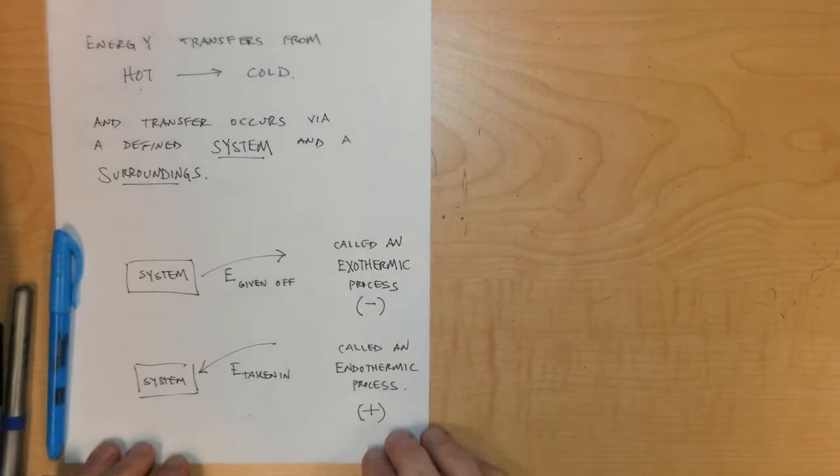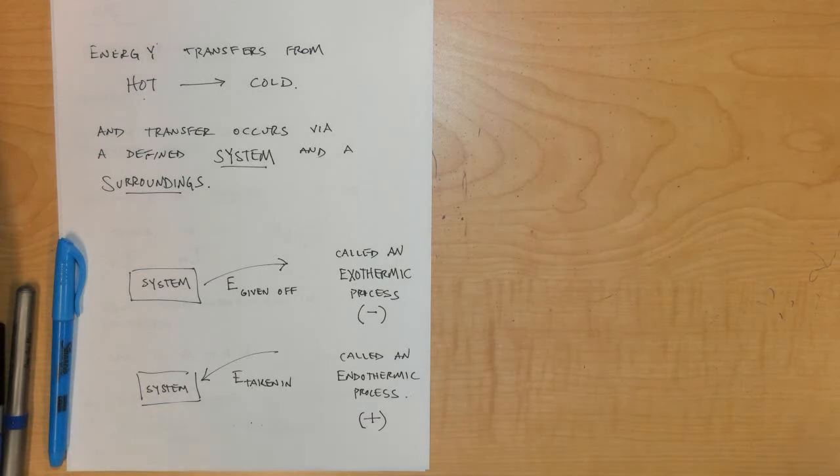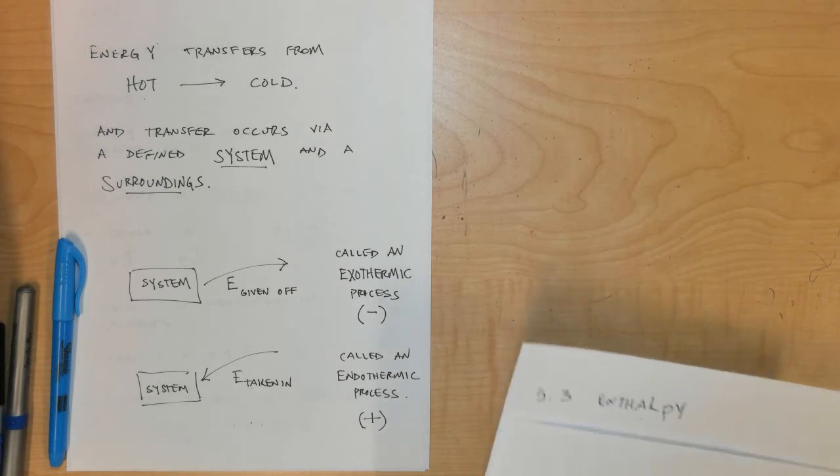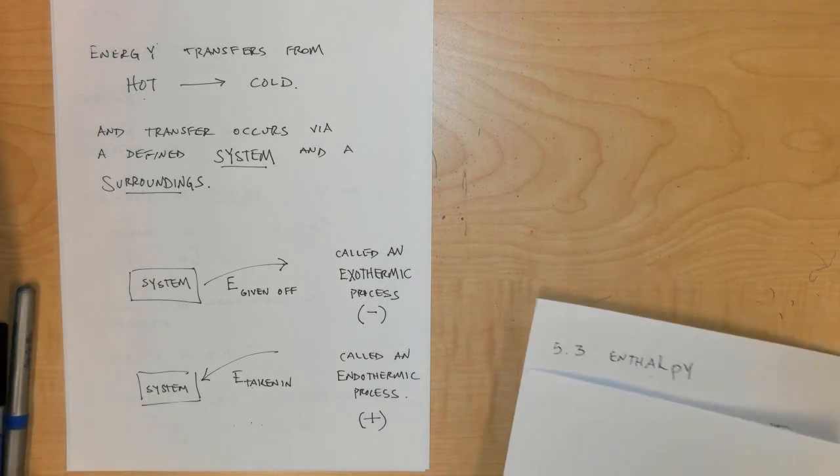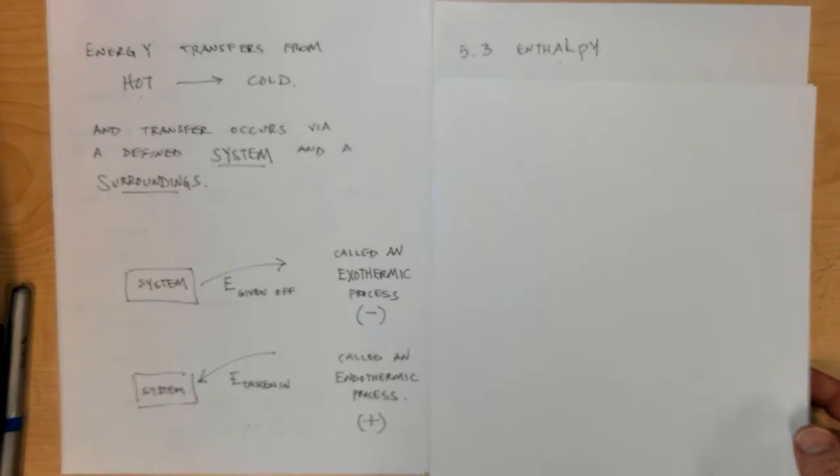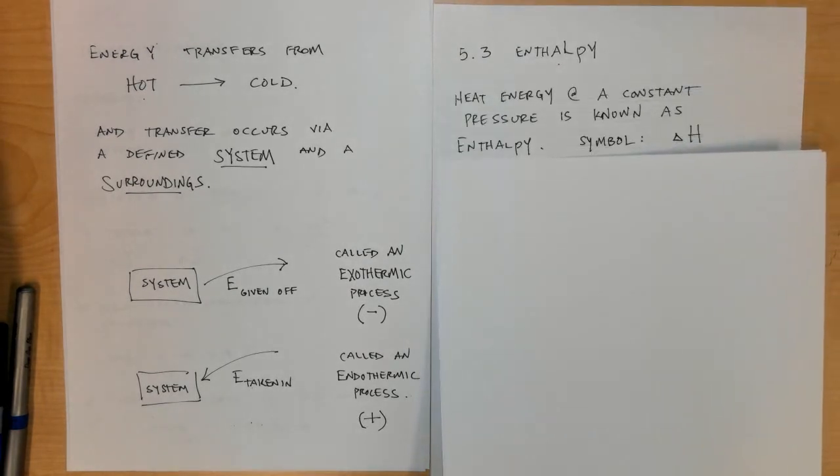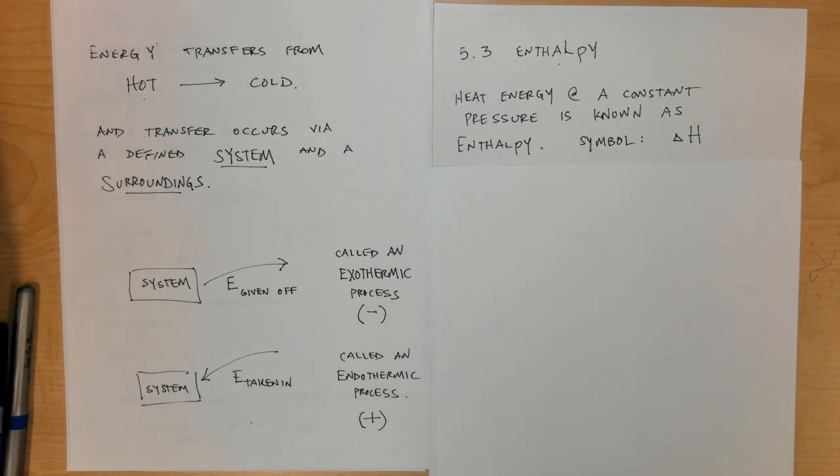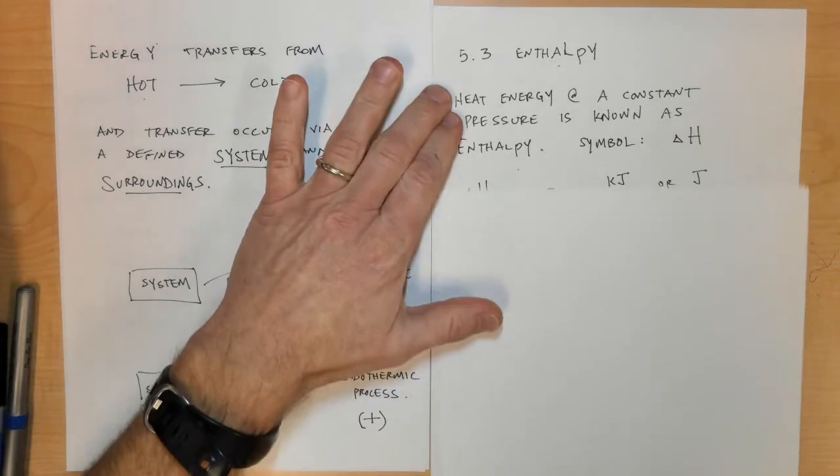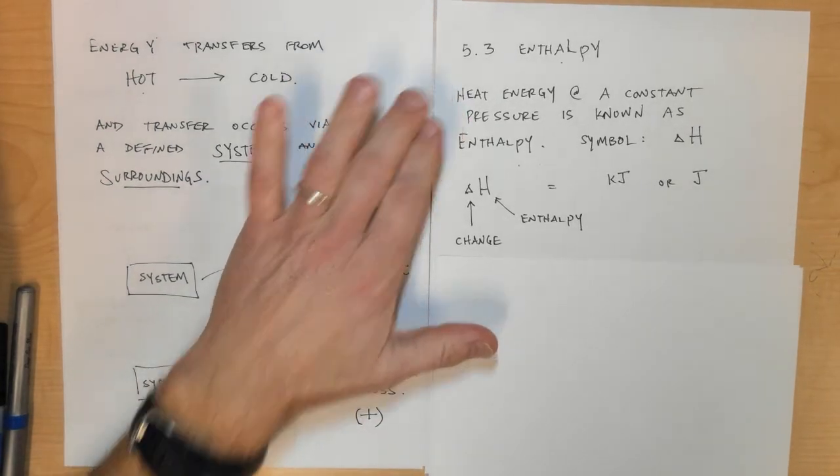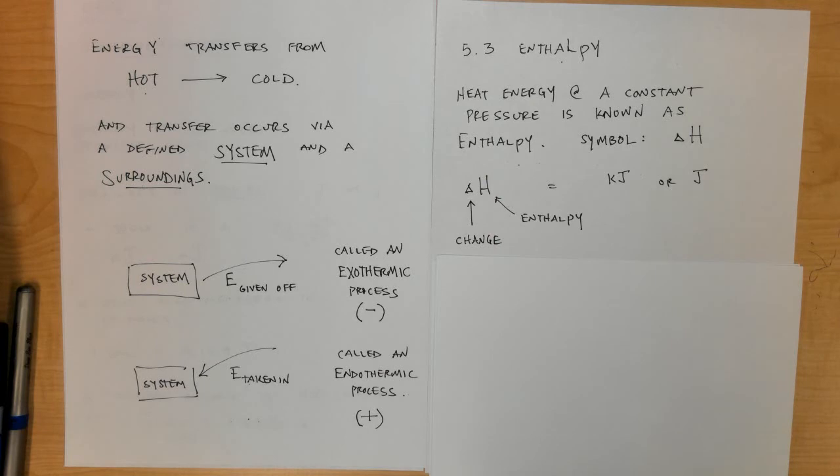When energy is measured at constant pressure and we're looking at heat energy in particular, it is known as enthalpy. Enthalpy is defined as heat at a constant pressure and is symbolized by a triangle with a capital letter H.